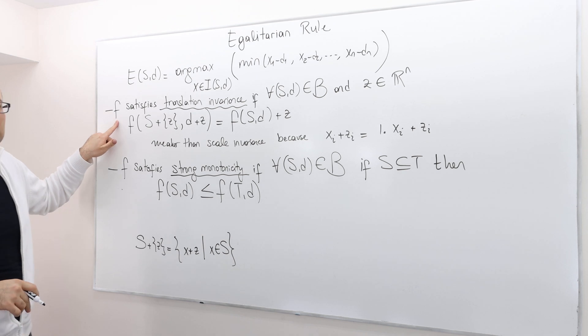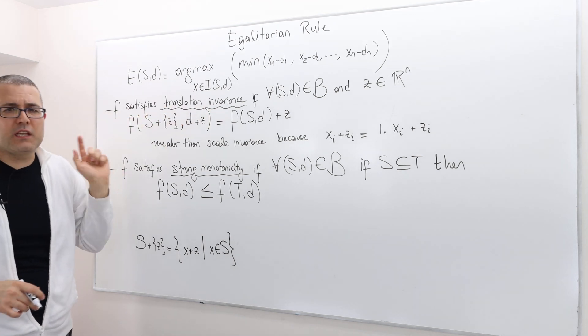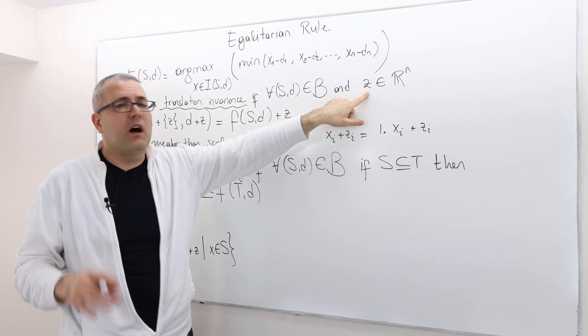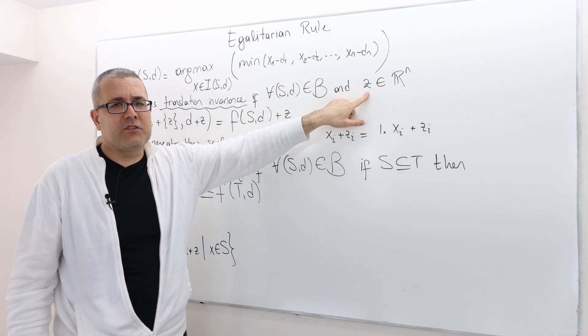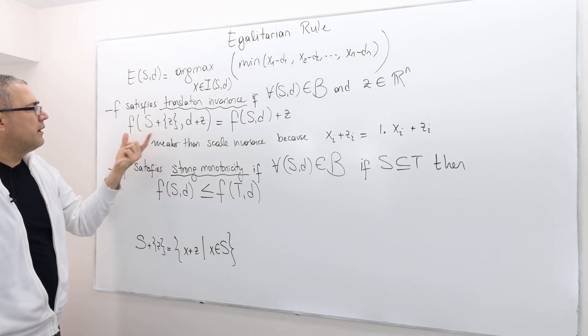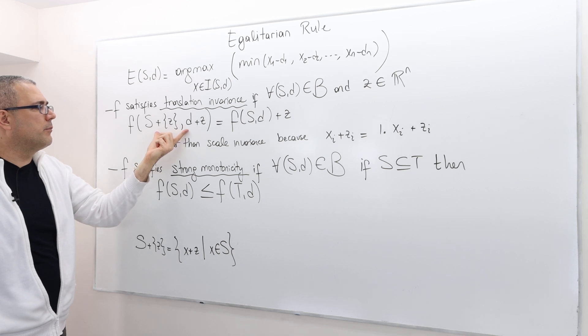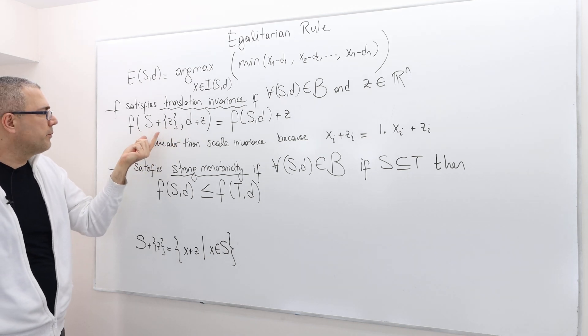A bargaining rule F satisfies translation invariance if for any bargaining problem S,D and for any real vector Z, the F of this new transformed bargaining problem—how do I transform it?